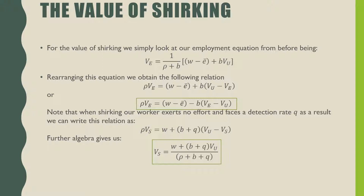Now let's talk about the value of shirking. We start from the employment equation and rearrange to get rho times VE equals W minus E-bar plus B times (VU minus VE), which can also be written as rho VE equals W minus E-bar minus B times (VE minus VU). When shirking, the worker exerts no effort, so the E term drops out, and they face a detection rate Q which augments their job breakup rate. This gives us the value of shirking: W plus (B plus Q) times VU, all over (rho plus B plus Q), shown in the boxed equation.